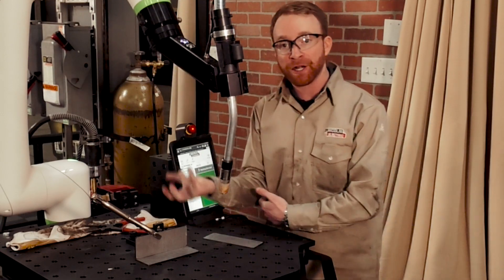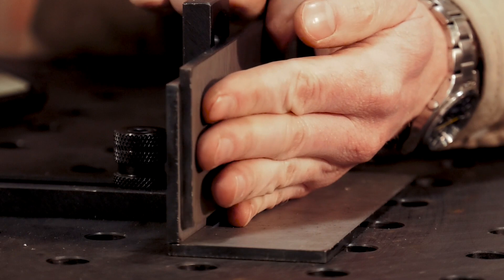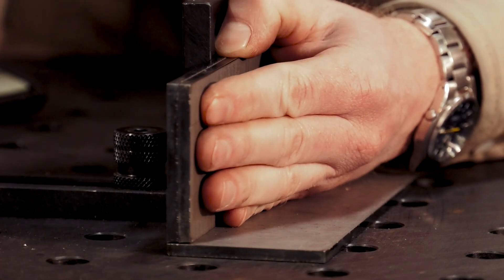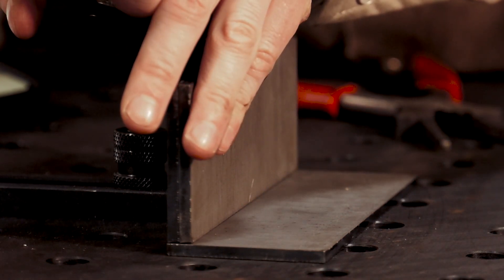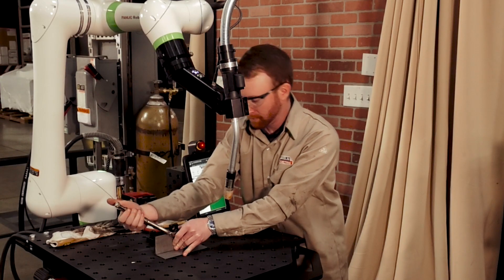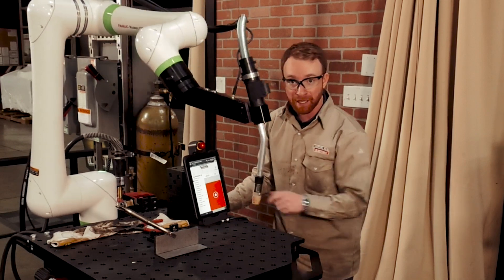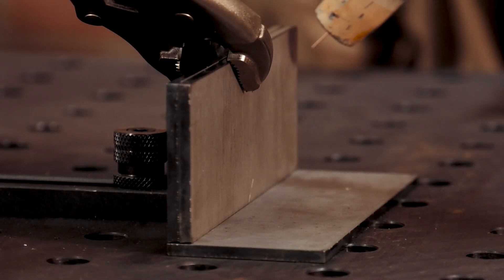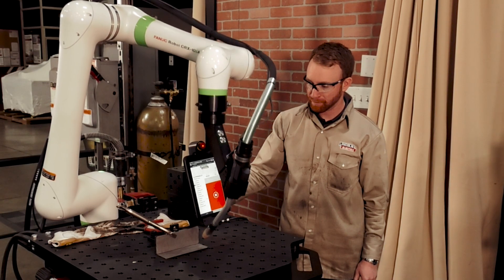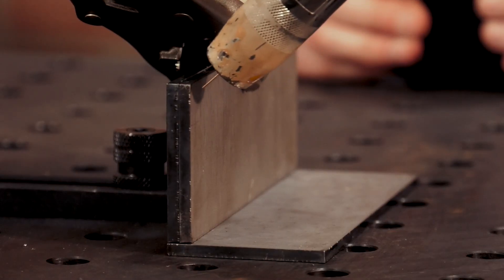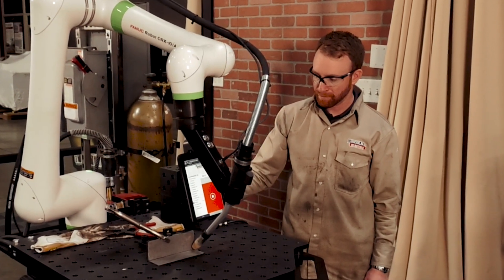From here, if we were to set up another weld and the jig or the part itself is off just a little bit, like let's say we put another plate in between these two pieces, so now it's like our part itself has moved, we can run that job again and it will still weld in the exact same seam. Just like that.